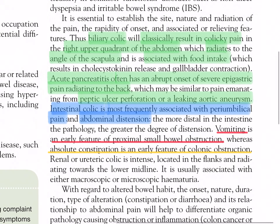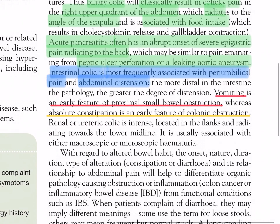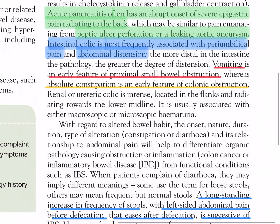Acute pancreatitis often has an abrupt onset of severe epigastric pain radiating to the back, which may be similar to pain emanating from peptic ulcer perforation or a leaking aortic aneurysm. Intestinal colic is most frequently associated with periumbilical pain and abdominal distension — the more distal the intestine, the greater the degree of distension. Vomiting is an early feature of proximal small bowel obstruction, whereas absolute constipation is an early feature of colonic obstruction. Renal or ureteric colic is intense, located in the flanks, and radiates towards the lower midline, usually associated with either macroscopic or microscopic hematuria.